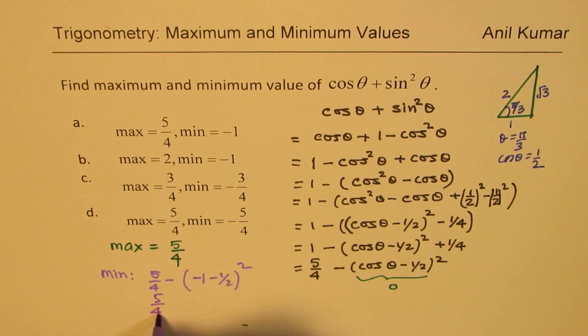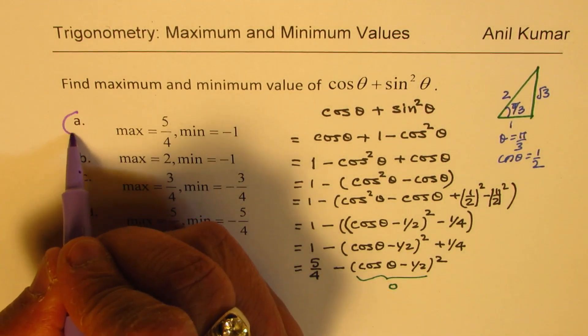So it could be 5/4 minus... If I take this as -1, minus 1 and 1/2, that is going to give me the minimum. So that will be 5/4 minus 3/2 squared, which becomes 9/4. So that gives you a value of -4/4 or -1. So we get a minimum value of -1.